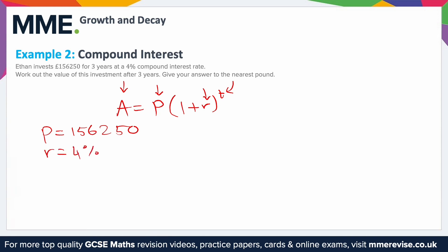So what do we have? P is 156,250. R is four percent, but remember we need it as a decimal, so 0.04. And t, working in years, is three years. Substituting these in: 156,250 times (1 plus 0.04) to the power of three.